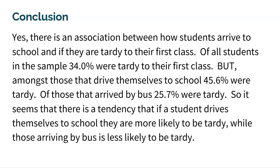The only word we cannot use is 'cause,' because this is not an experiment. We cannot say that driving yourself to school will cause you to be tardy — there are too many confounding variables. But we can say there's a tendency, a connection, an association, a relationship. If 34% of kids were tardy across all travel methods, that would actually show no association. But based on this data there clearly is an association. This is a huge question when it comes to two-way tables — make sure you're ready for it.